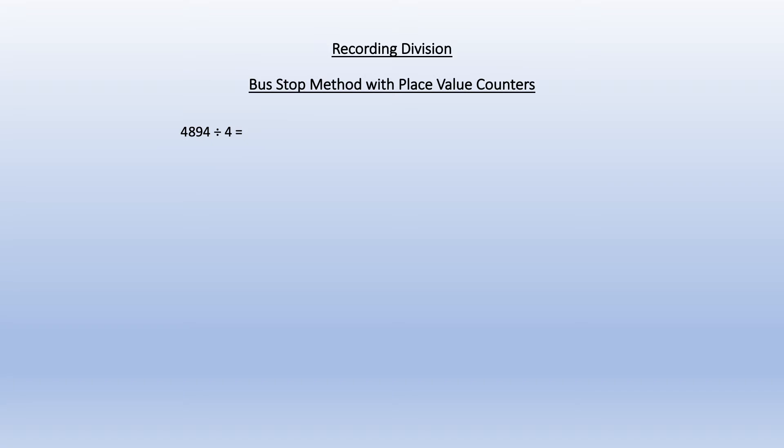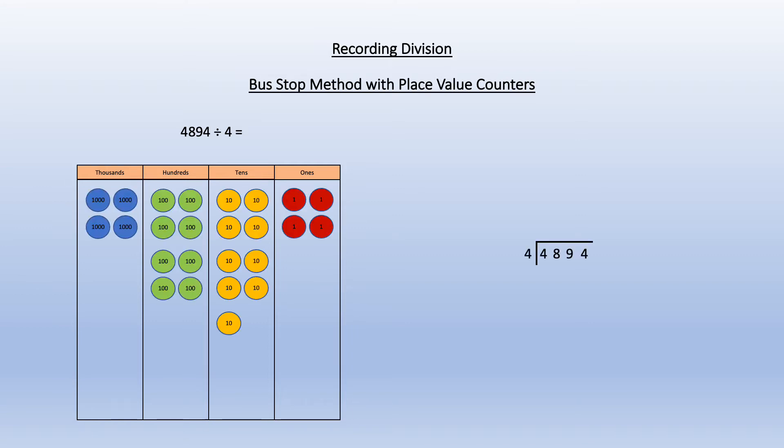My example here is 4894 divided by 4. I draw a grid with thousands, hundreds, tens and units. I partition the four digit number into four thousands, eight hundreds, nine tens and four ones. I write the question in the standard bus stop division format on the right.